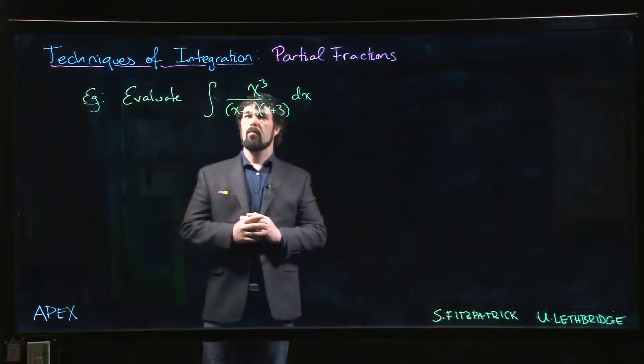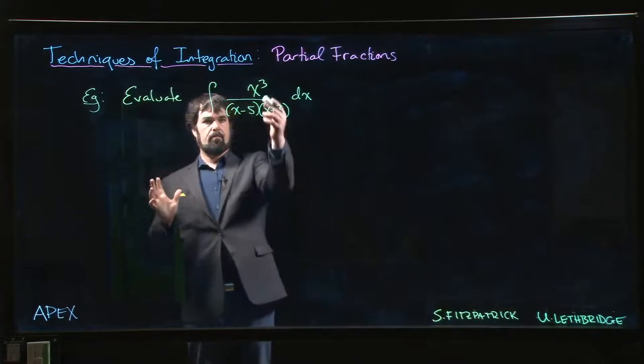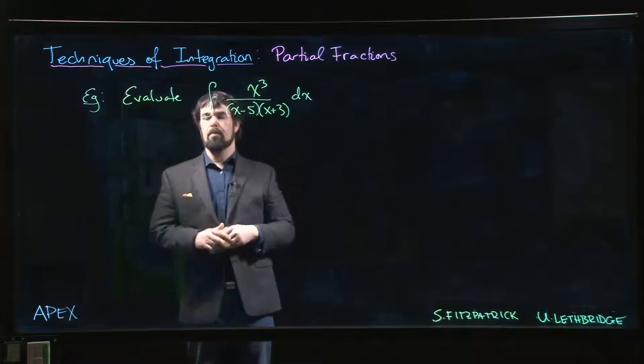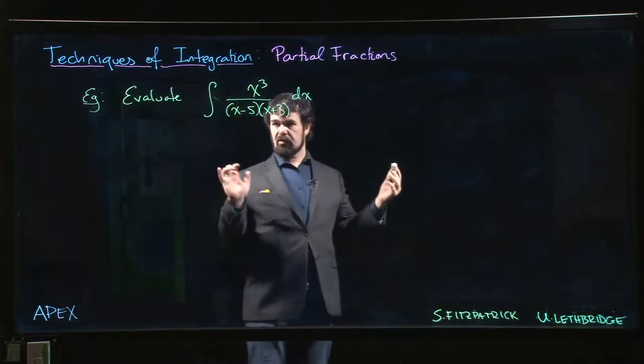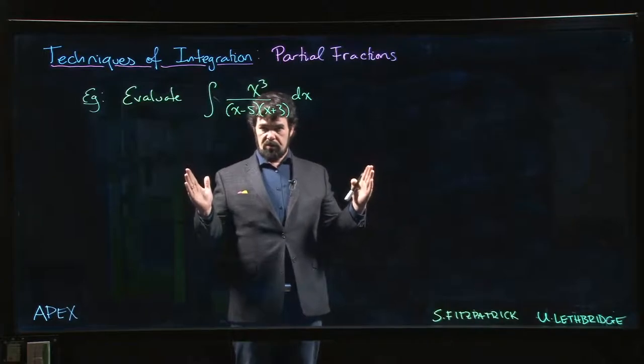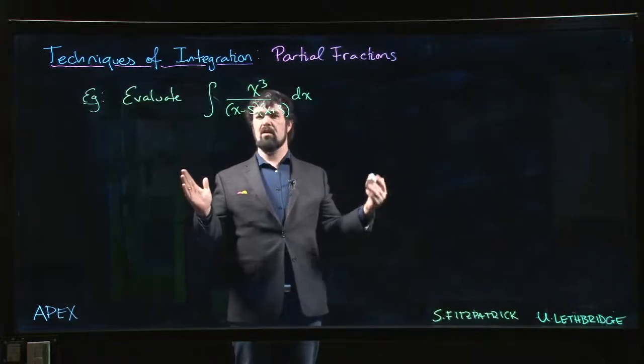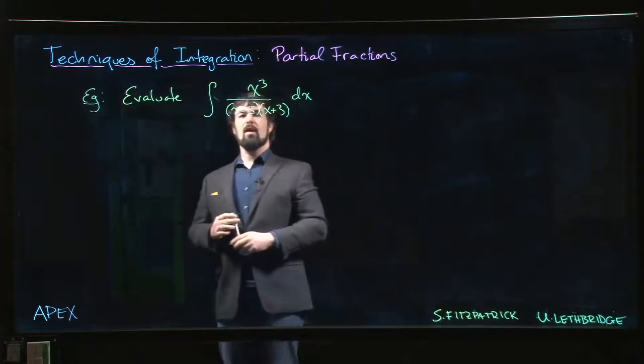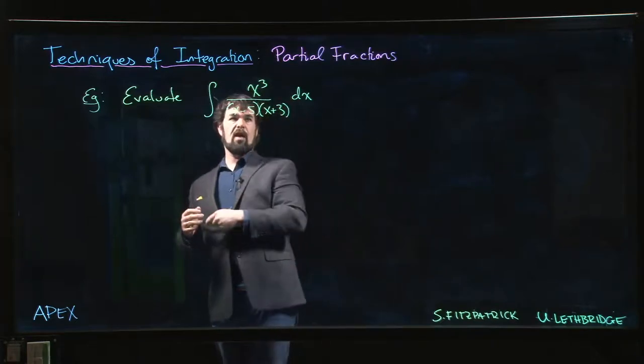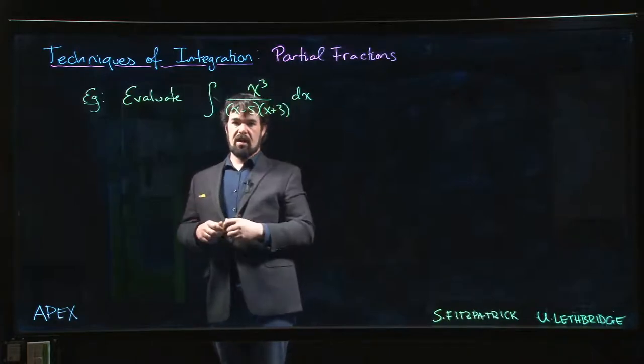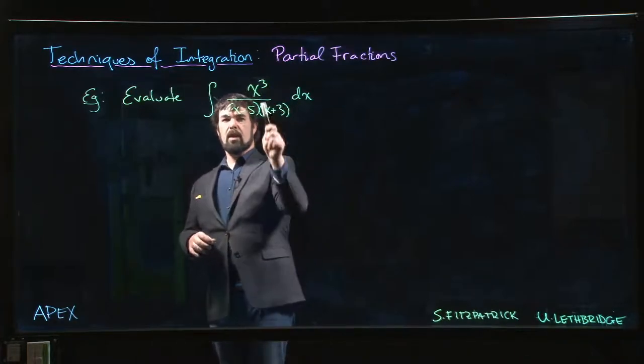Here's our next example. We have x cubed on top, two linear factors on the bottom. This should be relatively straightforward - just two linear factors, so we expect two terms in the partial fraction decomposition. There's no repeated roots or anything like that to worry about. There is one catch, however: partial fraction decomposition only works if the degree of the numerator is less than that of the denominator. We've got a cubic over a quadratic.